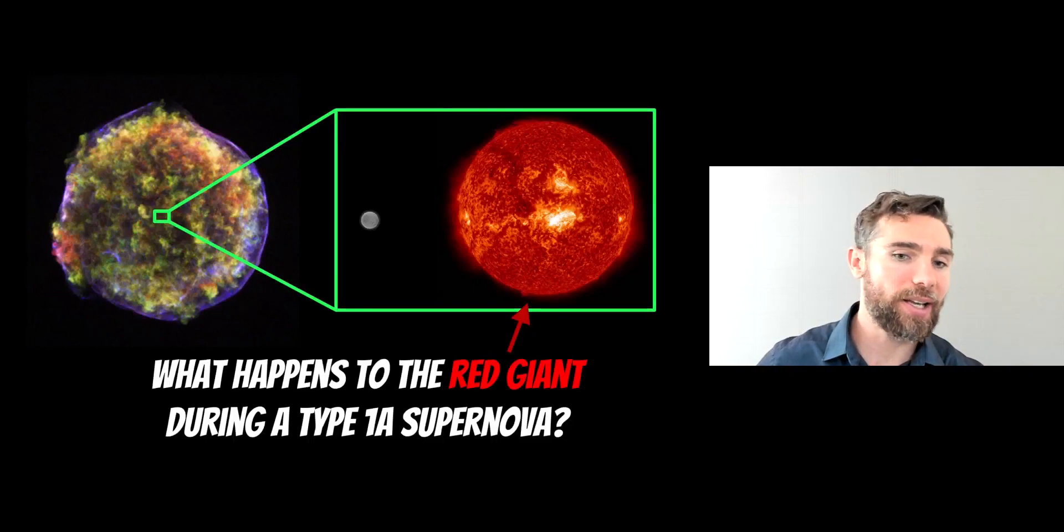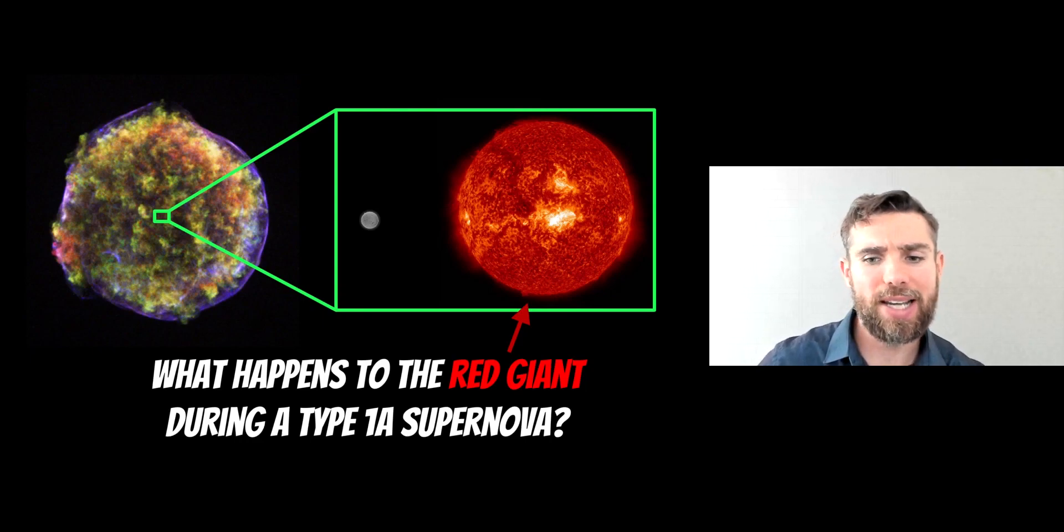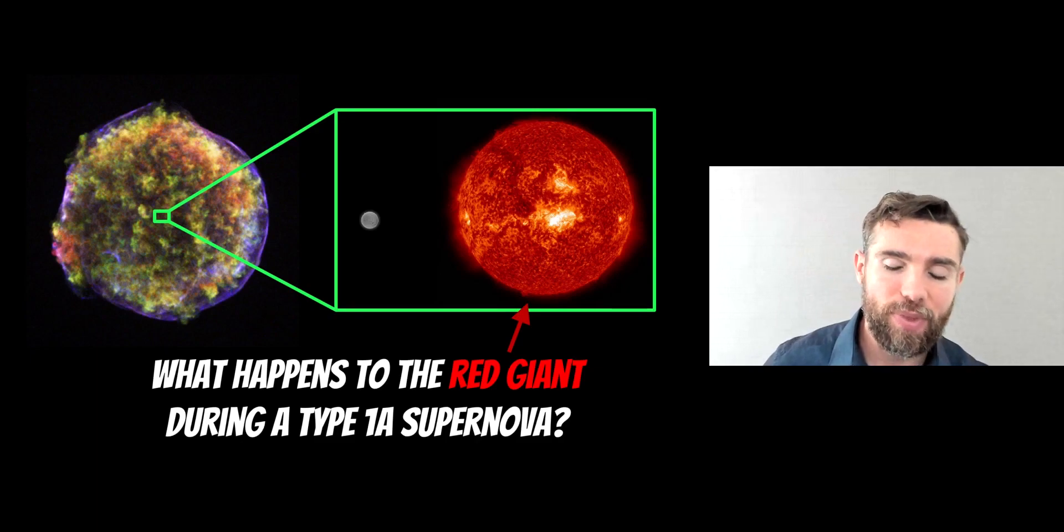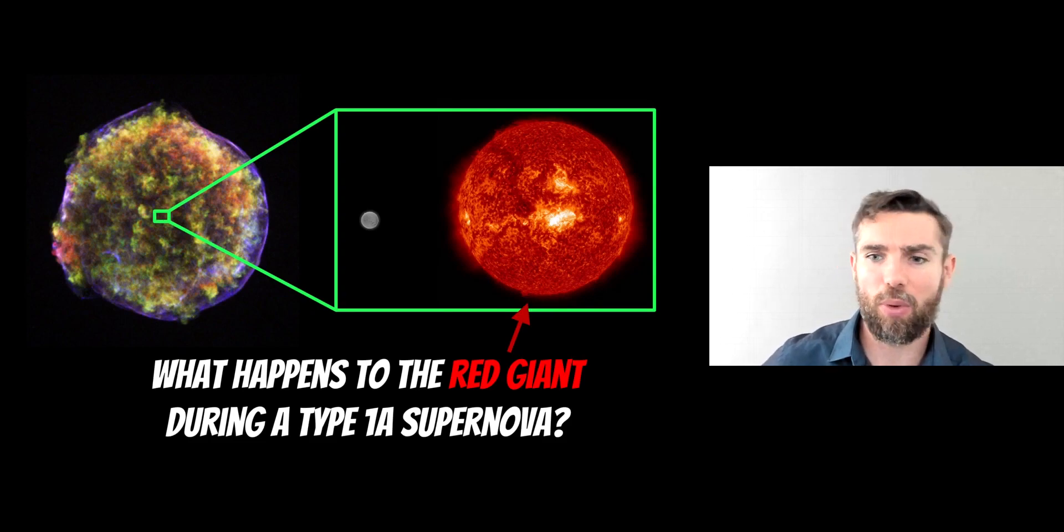I recently had a great question left on one of my videos about supernovas. It was relating to what happens to the second star after a Type 1a supernova. In a Type 1a supernova, you've got a white dwarf, red giant or main sequence star, and the white dwarf star basically explodes into a supernova. And the second star, well what happens to it? It's not often discussed and it's not something that's really fully understood properly, but it's a great question.